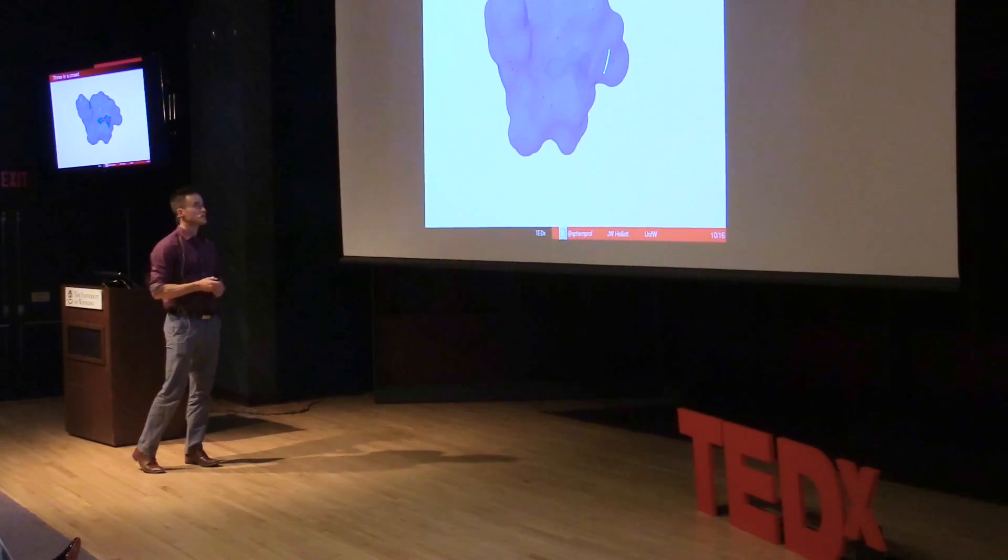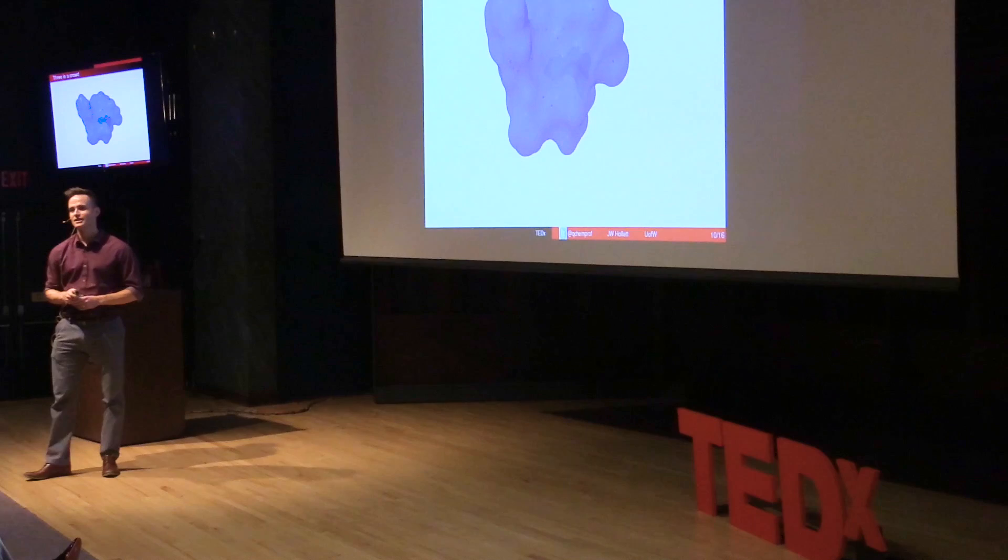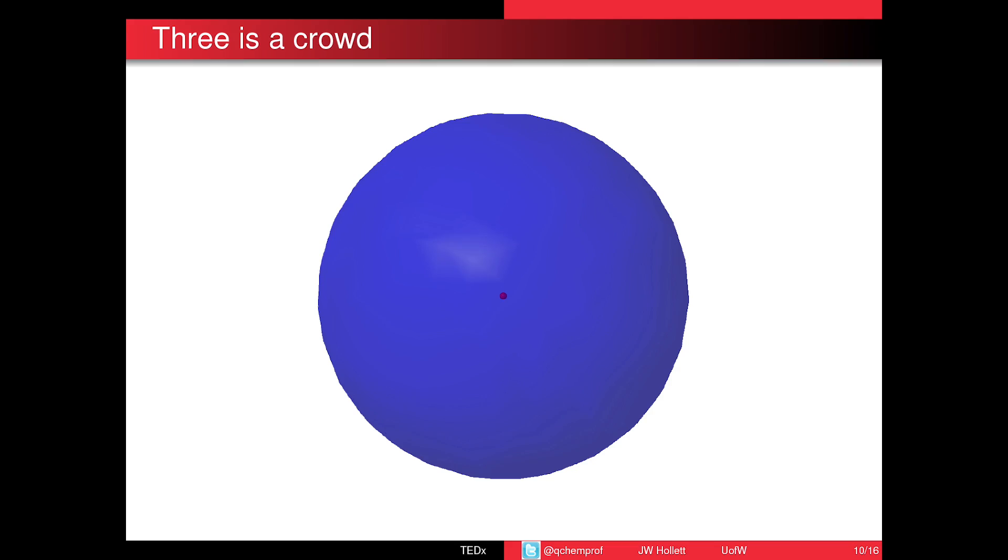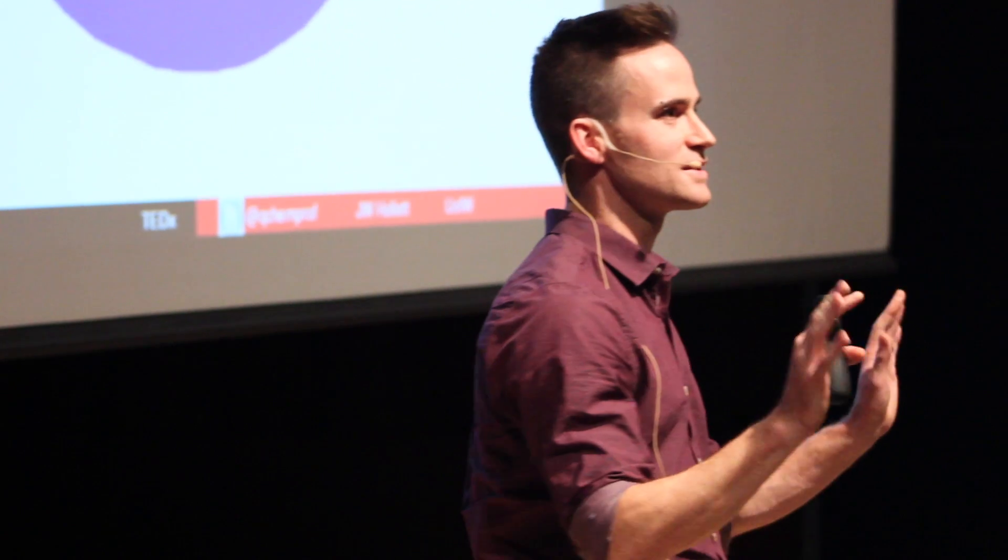So then, how do we go about modeling matter? Well, I won't talk about how to model sofosbuvir just yet. Maybe I'll simplify it, and we'll talk about a single hydrogen atom. So there's a nucleus, and then we have this blue cloud that represents our electron.